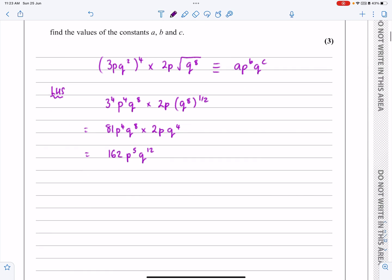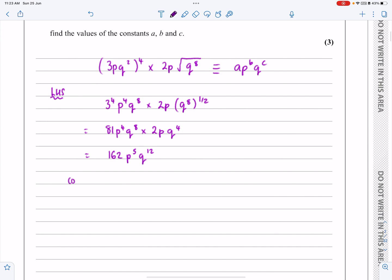So if I compare that to the right-hand side, comparing gives: a is equal to 162, b is equal to 5, and c is equal to 12.